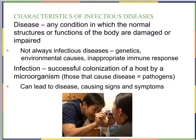First, let's talk about what an infectious disease is. A disease is any condition in which the normal structures or functions of the body are damaged or impaired. Dis-ease is dis-ease in the body — anything that is not at ease, where something normally functioning a certain way is changed or impaired.